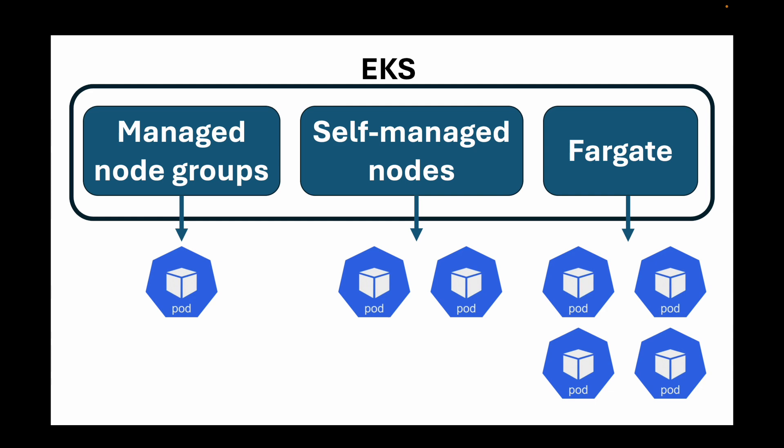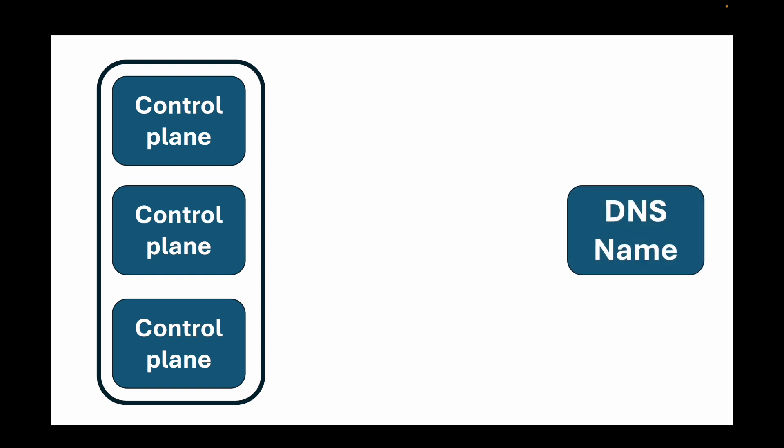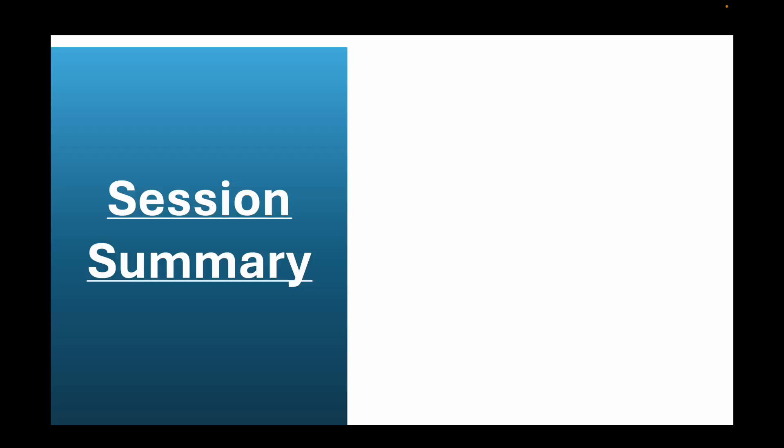As an administrator you need a way to connect to the control plane to issue commands about what pods to run, where to run them, and what to do with your data plane — scaling up, scaling down, adding or removing nodes. You can connect to your cluster using a DNS name provided by EKS, which gives you an entry point to the API server. You can use kubectl, the Kubernetes command line tool, or the AWS console's graphical interface to send commands and get information about what's happening in the cluster.